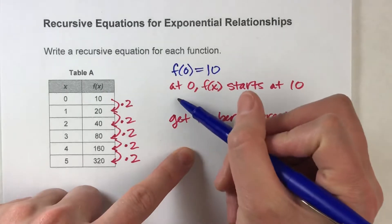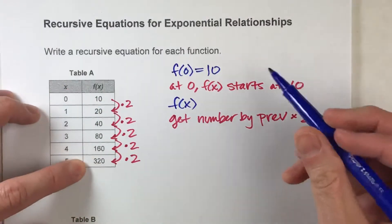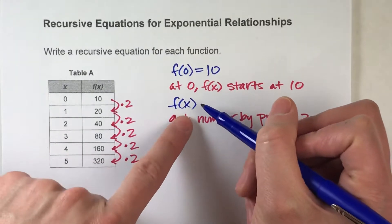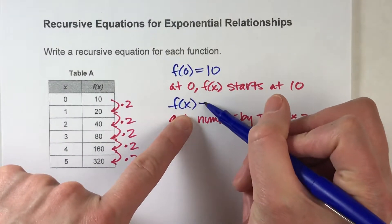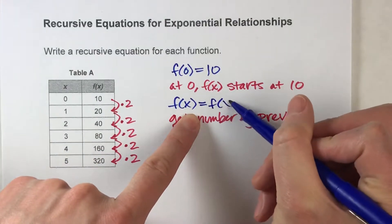For the second part, we know to get any number f of x, so any value f of x, we take the previous number. All right, so if f of x is the one we're focusing on, the previous value of x would be f of x minus one.